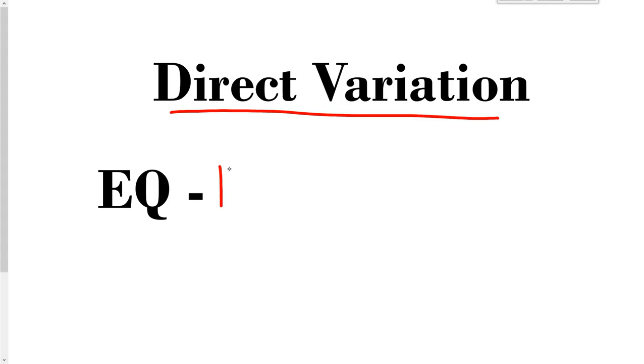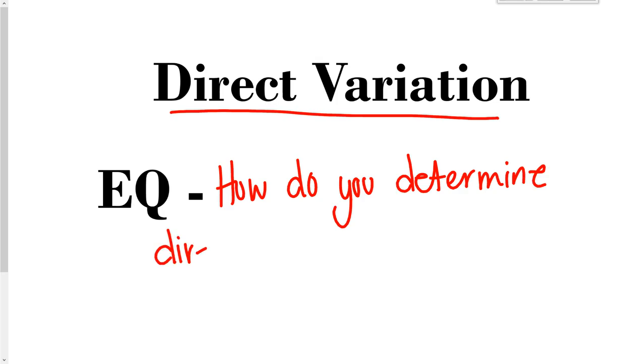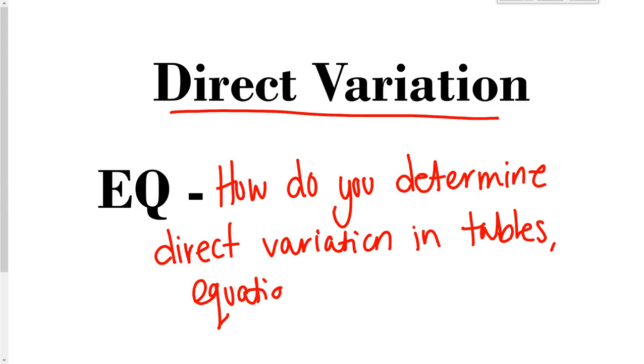The essential question is going to be: how do you determine direct variation in tables, equations, and graphs? So we are going to learn about direct variation, the equation for it, and then how can we figure out if something is showing us direct variation or not.